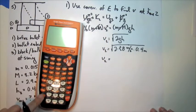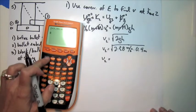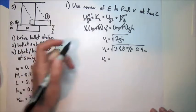I got my calculator. 2 times 9.8 times .4. So 2.8 meters per second.